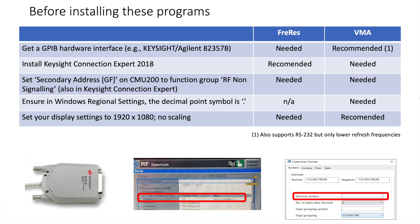Don't forget to set the GPIB address of the device, but also the secondary address which is a function group within the device — you must set this both on the hardware device and in Keysight Connection Expert on the computer. Another important point: for the VMA program, make sure that in your Microsoft Windows regional settings the decimal point is set to a period. I live in a country where the decimal symbol is a comma, and VMA was not running properly at all. After talking with the developer it turned out to be that issue — it's related to the .NET environment and must be fixed in the operating system.